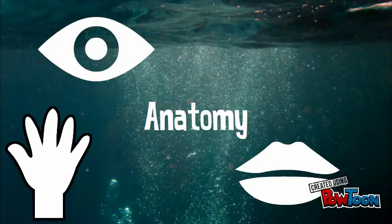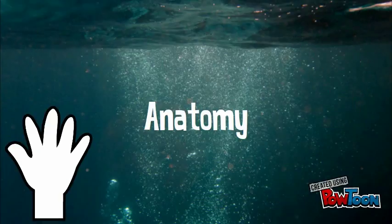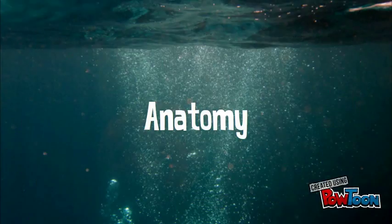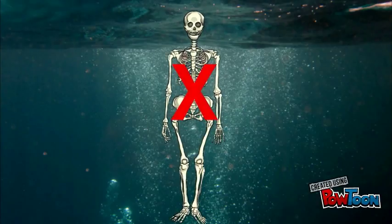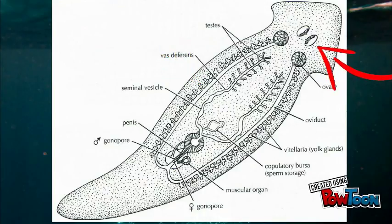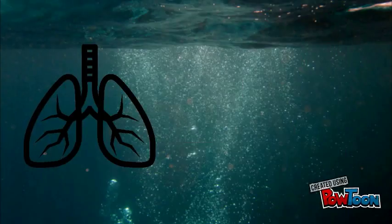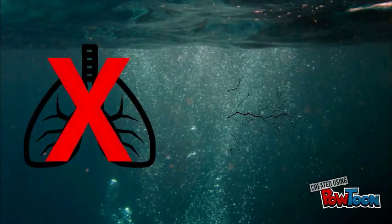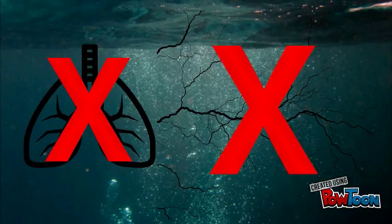Anatomy of a flatworm: A flatworm does not have a skeleton. They have two nerve cords running down either side of their body, connecting to their brain. They also have two eye spots at either side of their head region that can sense light. A flatworm does not have a respiratory or circulatory system. Since they are so thin, they can take in oxygen directly through their skin.